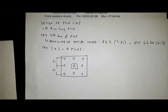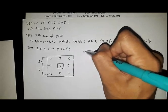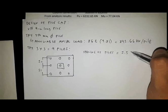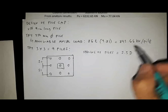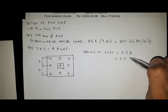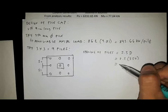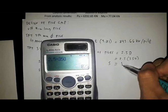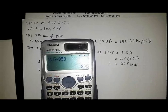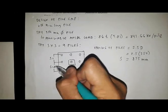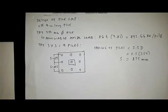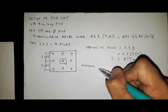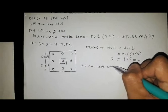Now let's solve for the spacing, the center to center spacing of piles. We have spacing of piles equals 2.5 times diameter equal to 2.5 times 350, so S equals 875 millimeters.